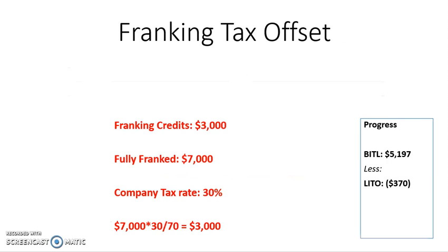After that, we look at the franking tax offset. The question tells us that the franking credits attached to our dividend are $3,000. If you are told what the franking credits are, that is automatically the amount you use for your franking tax offset — so that would just be $3,000.